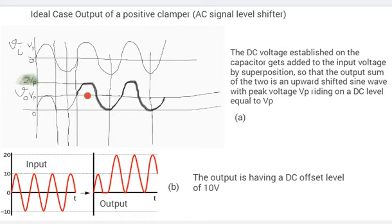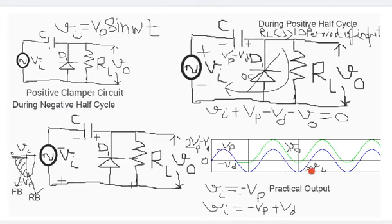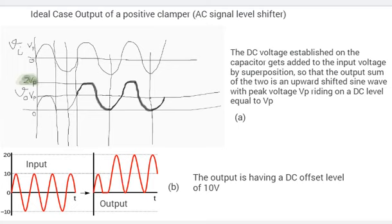So we can say that it is an upward shifted sine wave whose peak value is still Vp but now it is riding on a DC level equal to Vp. Here in this case we can say that when V_input is equal to Vp then V_output is equal to twice of Vp minus Vd.